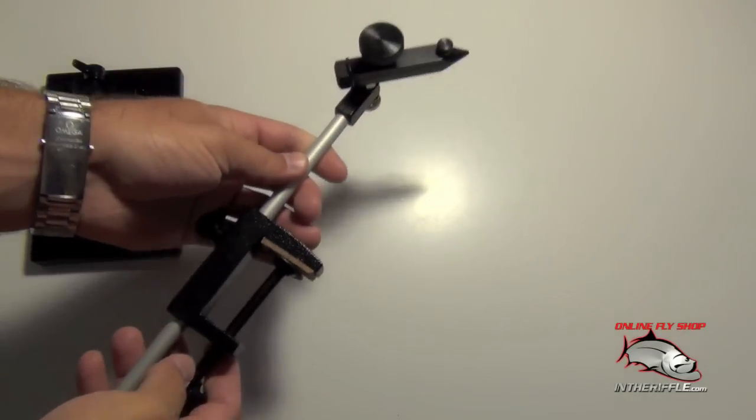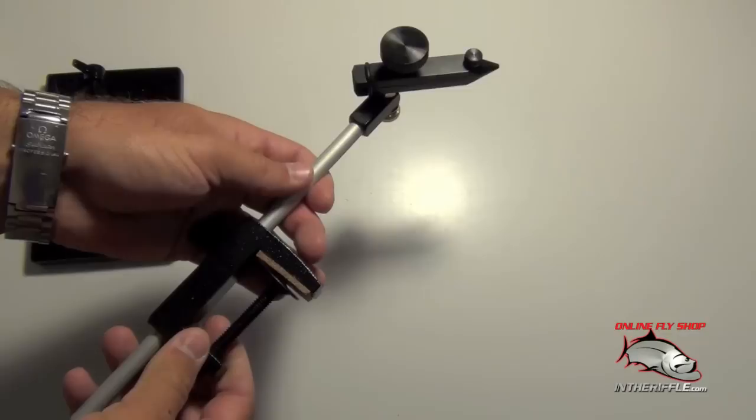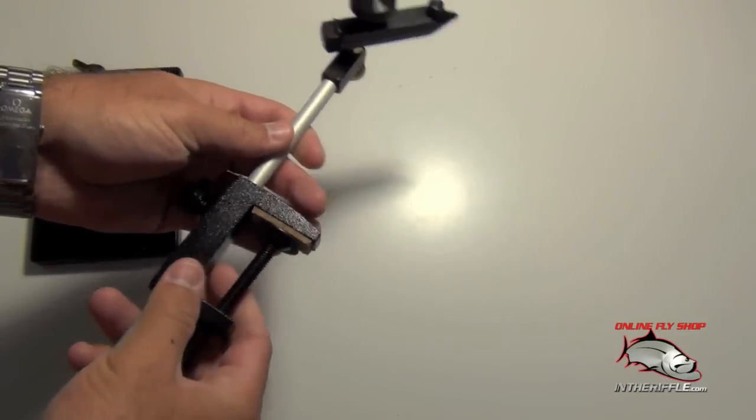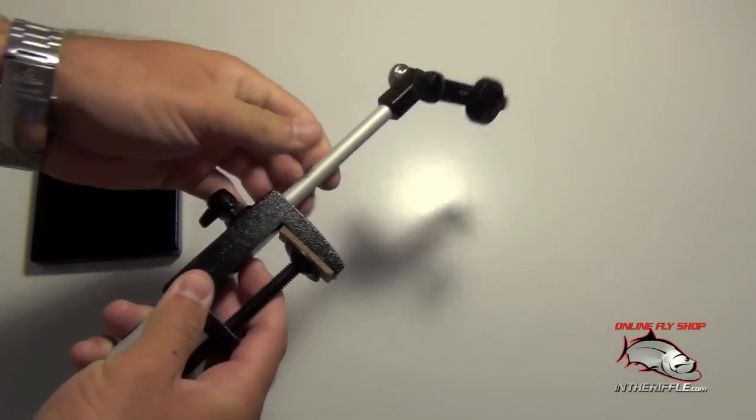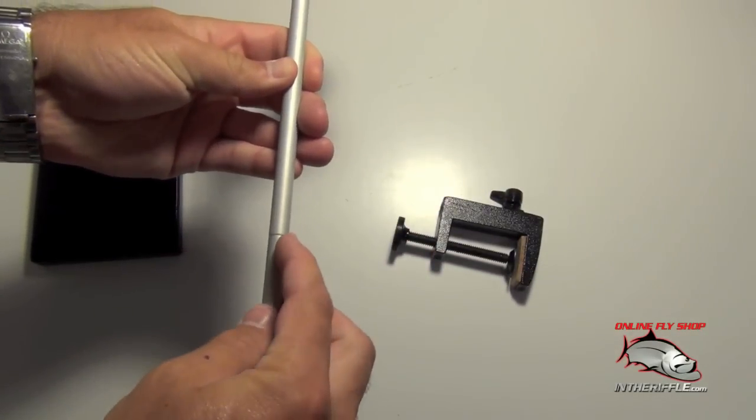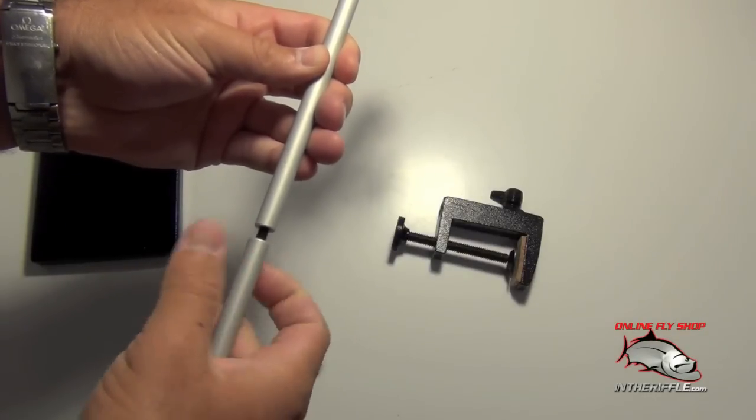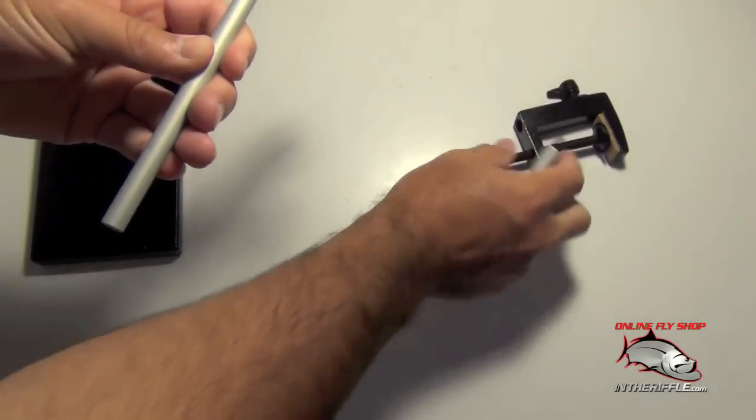The neat thing about the 2A vise is they kept in mind that some people like to use a pedestal for their fly tying vises, so it's easily interchangeable. You can simply remove the C-clamp. You can see this post here has a little section. You can unscrew the lower section, which shortens the stem.